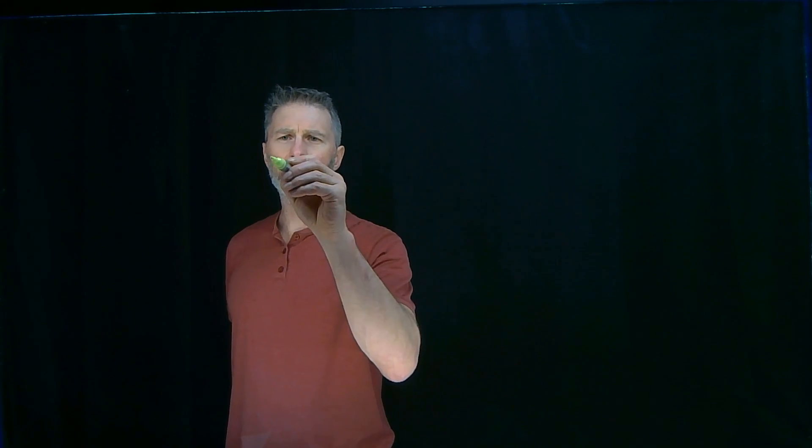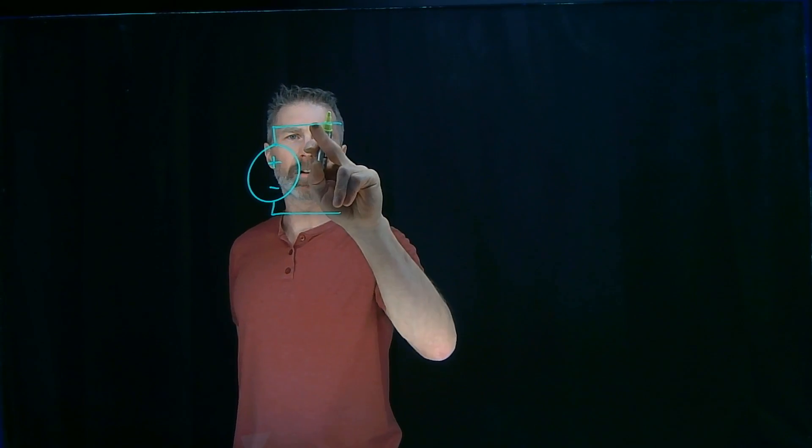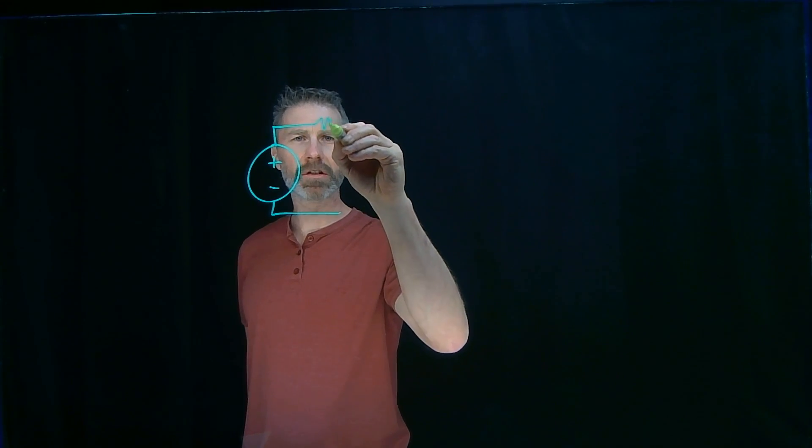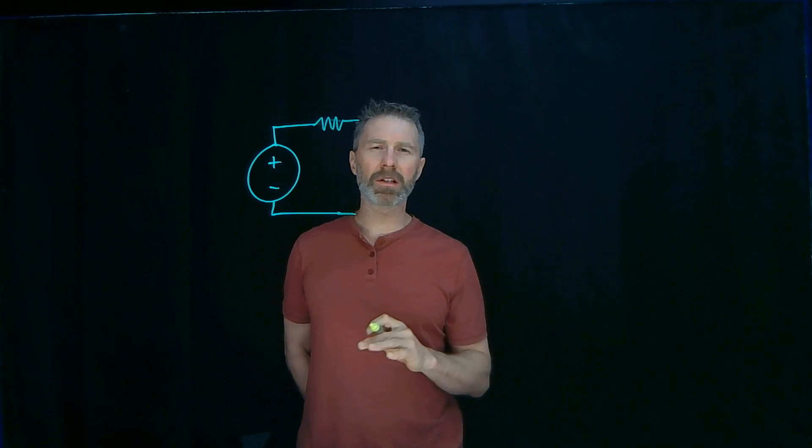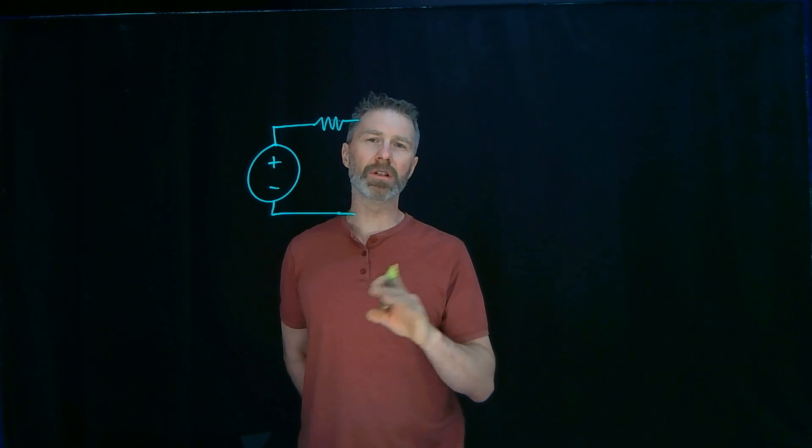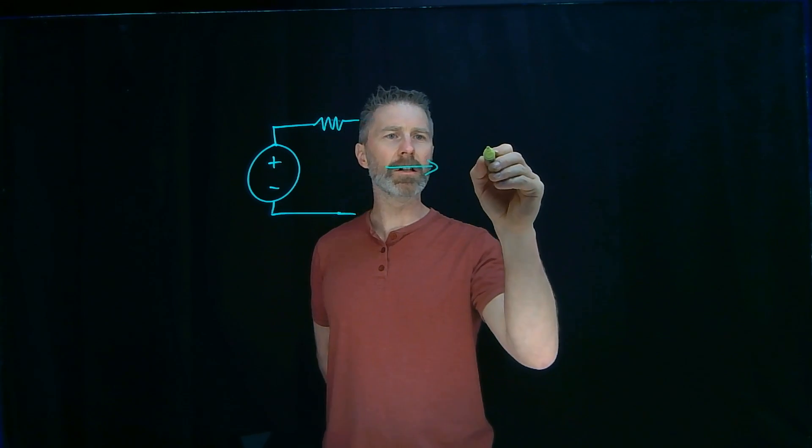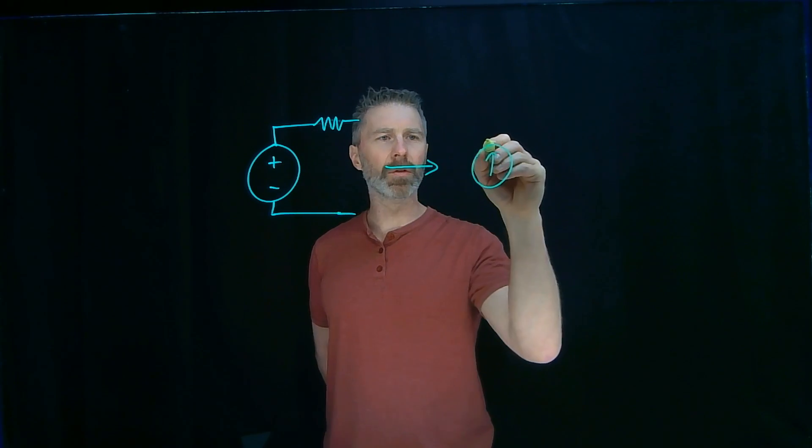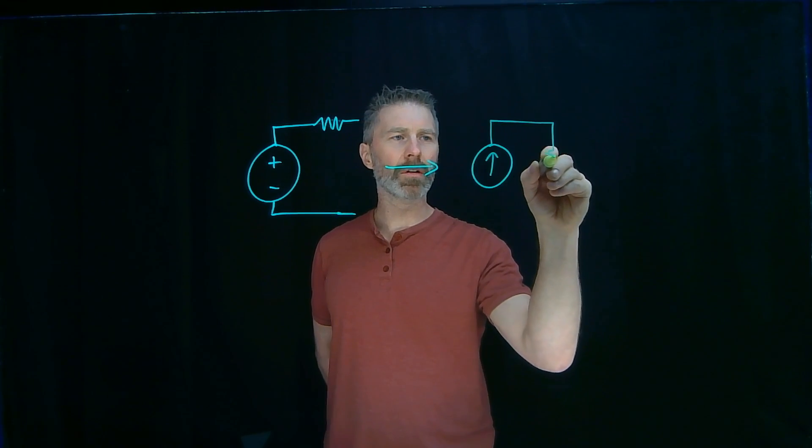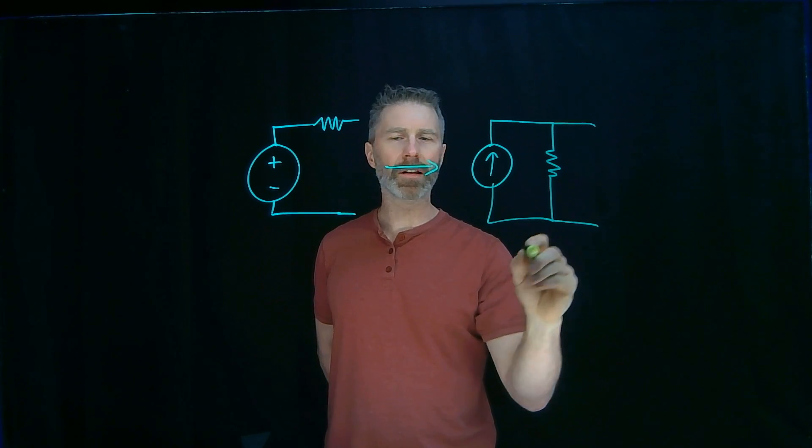Considering Thevenin's theorem, which says that any linear bilateral network can be converted into a voltage source in series with a resistor, and recognizing there's an equivalency between voltage sources and current sources, Norton's theorem totally makes sense,